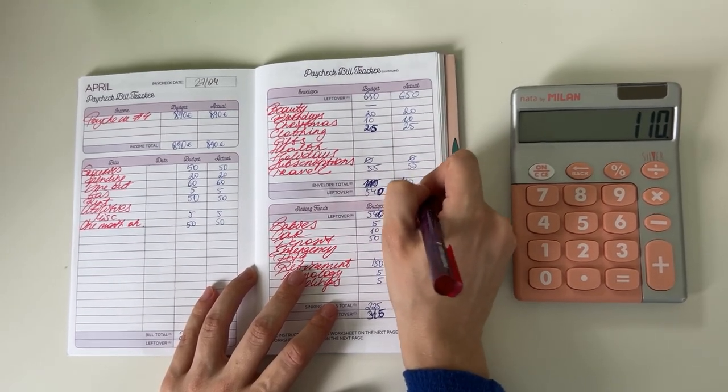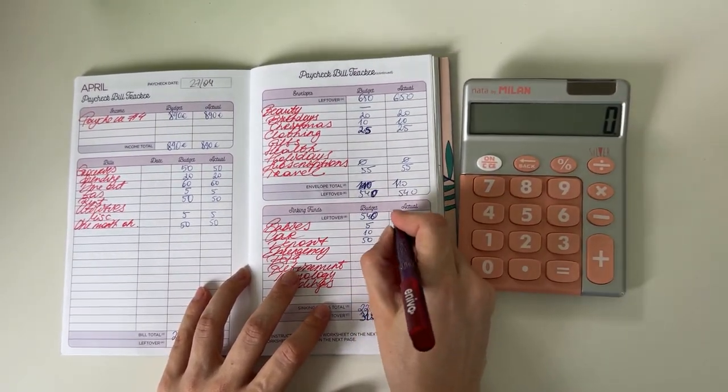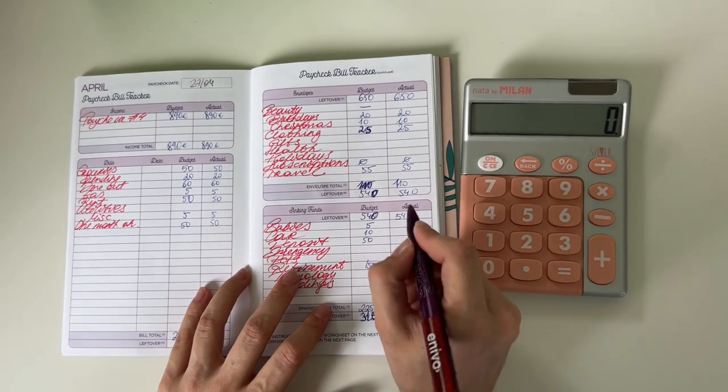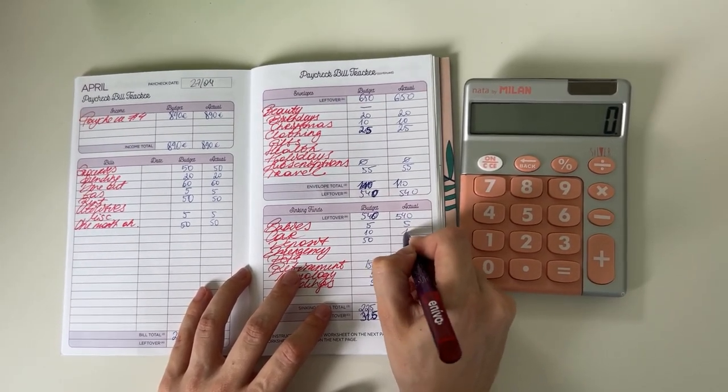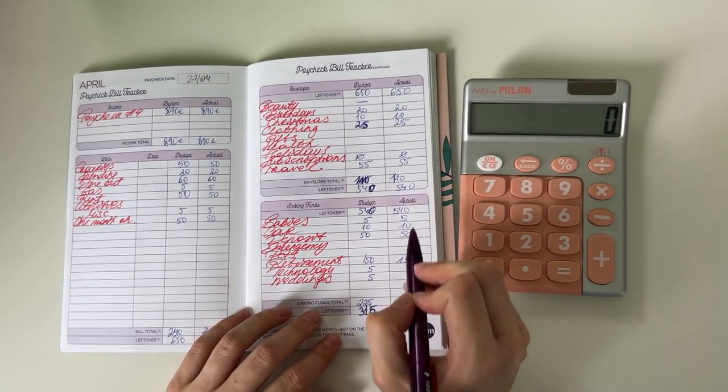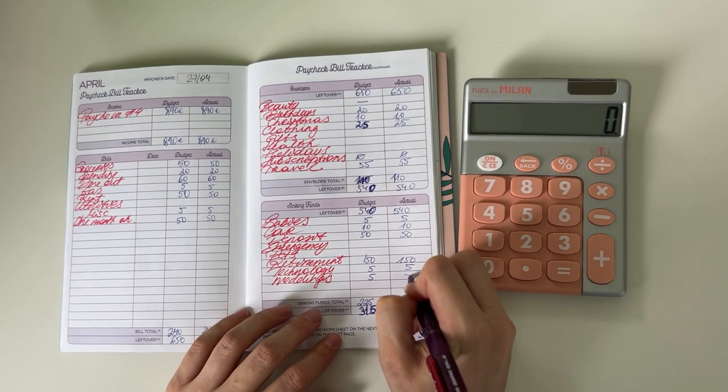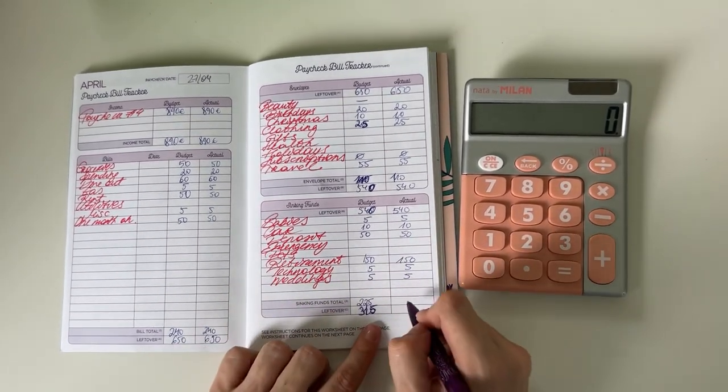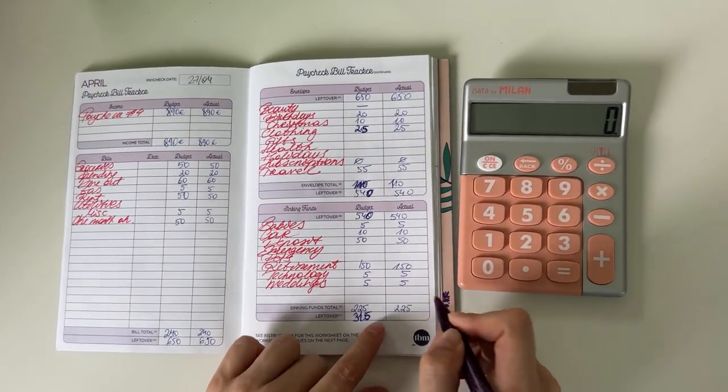We brought the 540 down to long-term sinking funds. 5 went into babies, 10 went into car, 50 went into deposit, 150 went into retirement, 5 went into technology, and 5 went into weddings. That was 225 in total, so 540 minus 225 is 315.